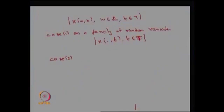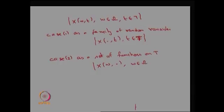Case 2 defines the stochastic process as a set of functions on capital T — that is, a collection of x(w, ·) for w belonging to omega. That means I have made a function on capital T. Once I fix one w, I will have one function, and if I fix another w — where w represents possible outcomes — a different possible outcome will create a different stochastic process.